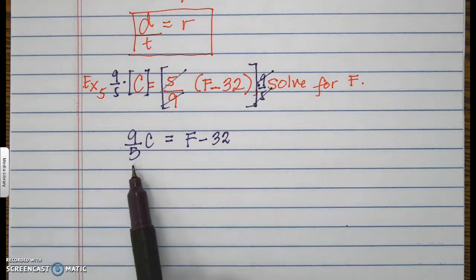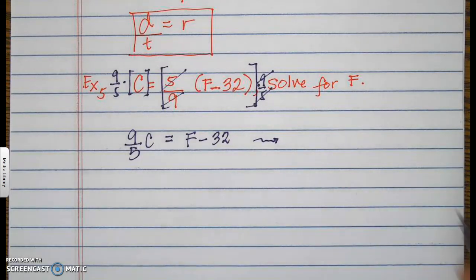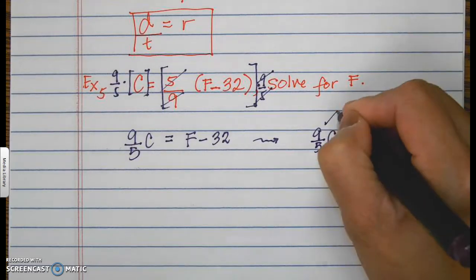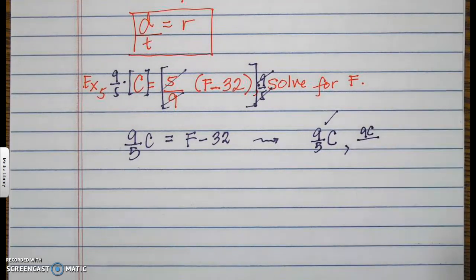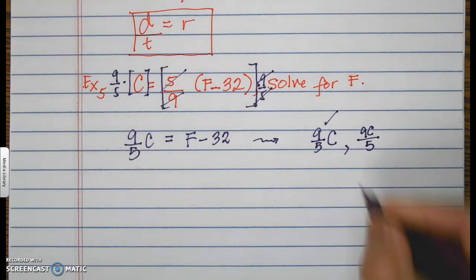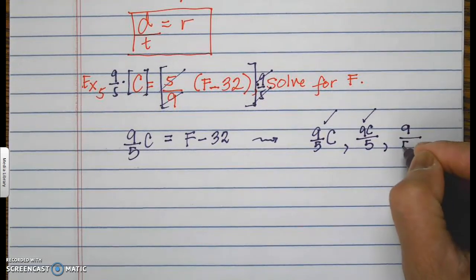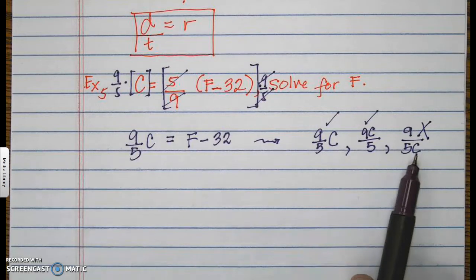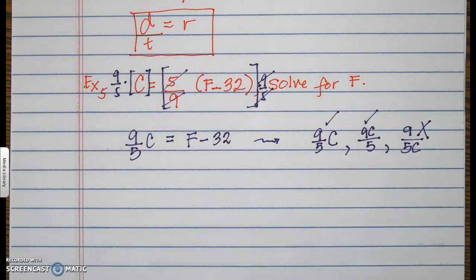Let's discuss the allowable ways to write 9 over 5 times c. The first permitted form is 9 over 5 with c in the front. Another permitted form is 9c in the numerator and 5 in the denominator. What is not allowed is 9 in the numerator and 5c at the bottom — that would give a different answer. The first two forms are both permitted.